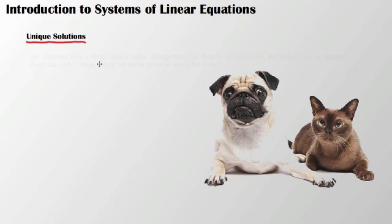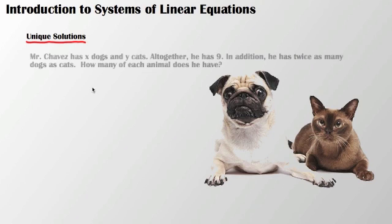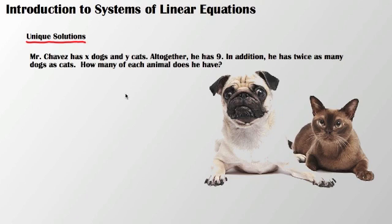Let's start with an example. Mr. Chavez has x dogs and y cats. Altogether, he has nine. In addition, he has twice as many dogs as cats. How many of each animal does he have?